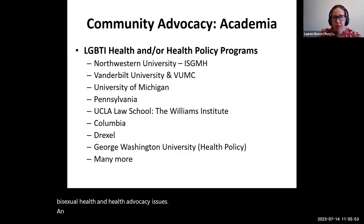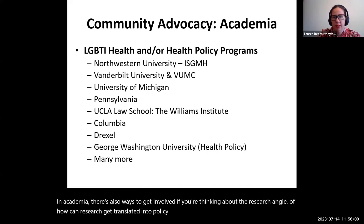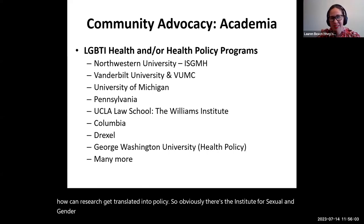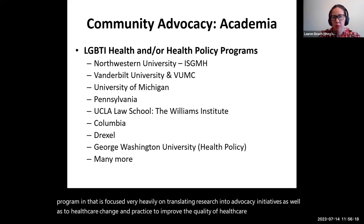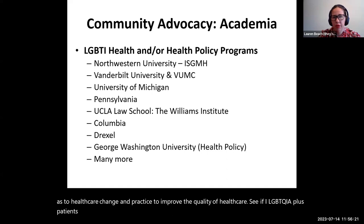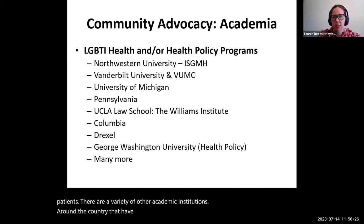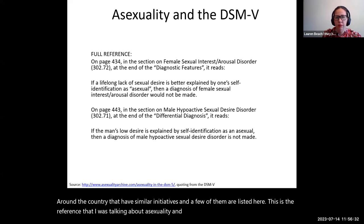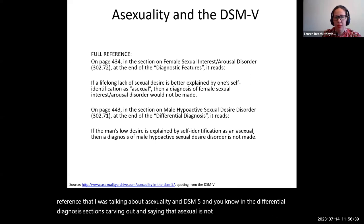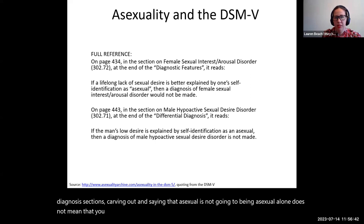In academia, there are also ways to get involved if you're thinking about the research angle of how research can get translated into policy. There's the Institute for Sexual and Gender Minority Health and Wellbeing at Northwestern, or ISGMH, where I am core faculty, with a focus very heavily on translating research into advocacy initiatives and healthcare change in practice to improve the quality of healthcare received by LGBTQIA+ patients. There are a variety of other academic institutions around the country that have similar initiatives. This is also the reference about asexuality in the DSM-5 — in the differential diagnosis sections, it's clarified that being asexual alone does not mean you would receive a mental health diagnosis.